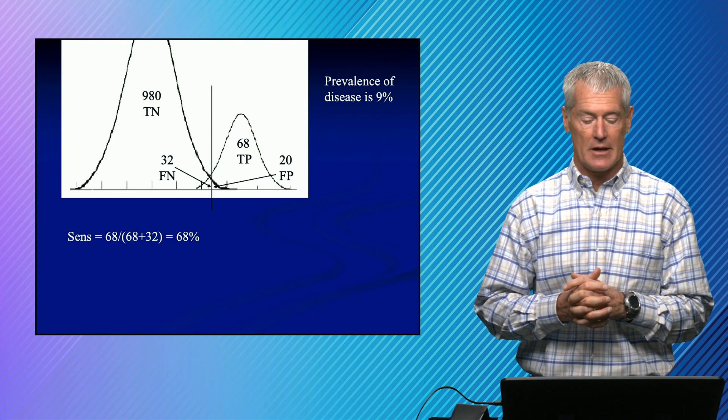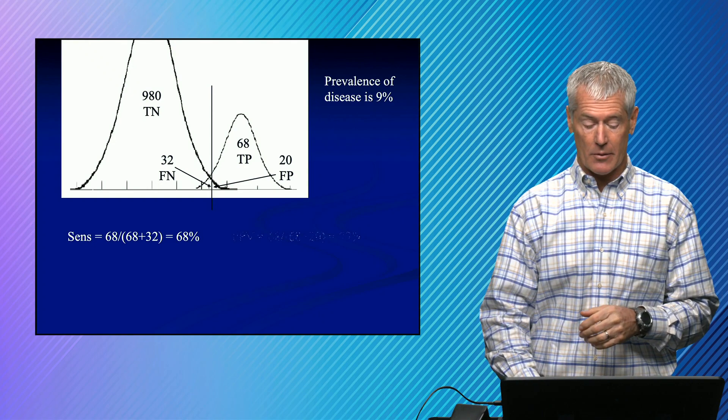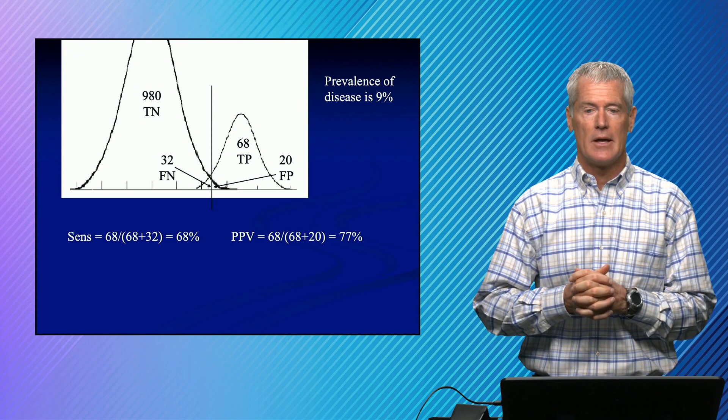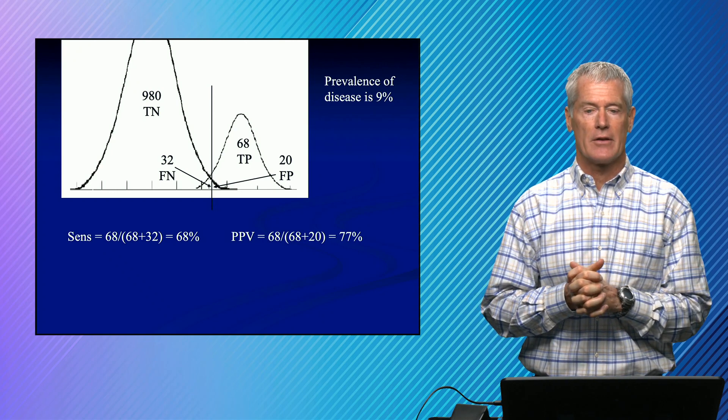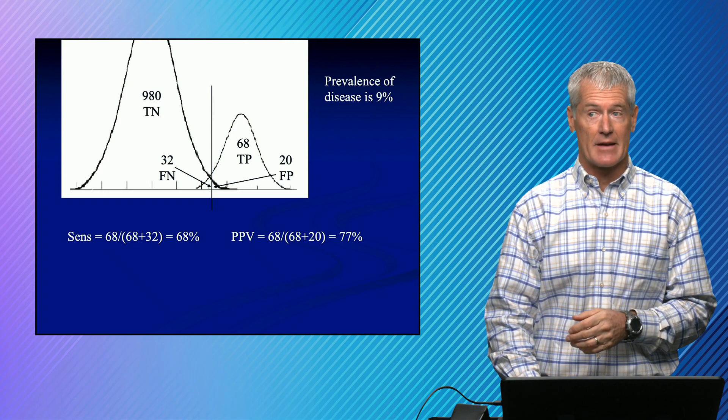And if we look at our sensitivity, it hasn't changed. That's a characteristic of the test. But if we look at our positive predictive value, it's gone way down. So our positive predictive value is 68 over 68 plus 20, or 77 percent.